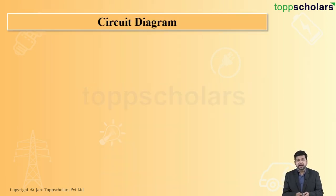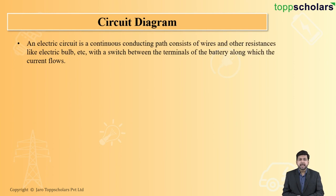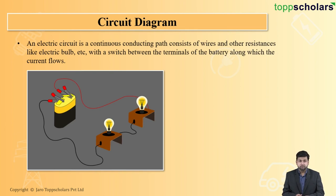So let's start with your first topic, that is a circuit diagram. Now, what do you mean exactly by a circuit diagram? A circuit diagram is nothing but a path consisting of a wire, some resistance, electric bulbs with a switch and a battery connected to it.